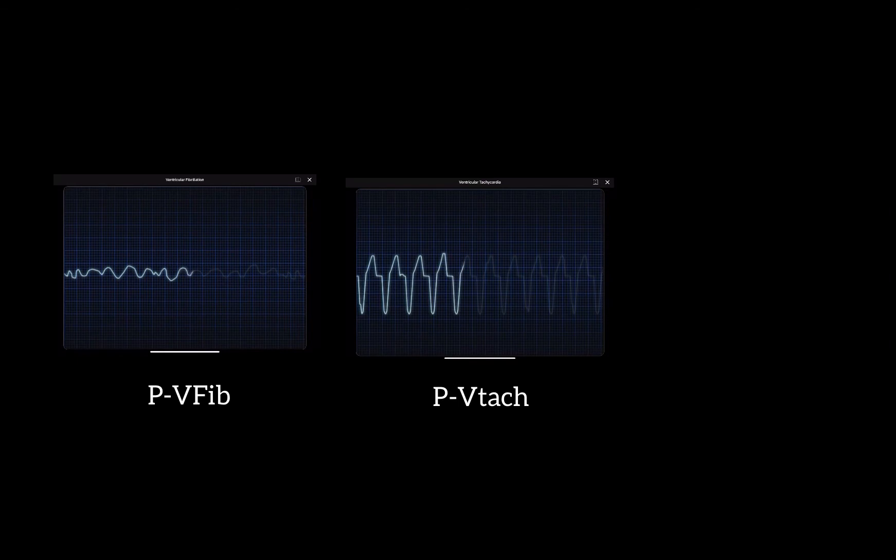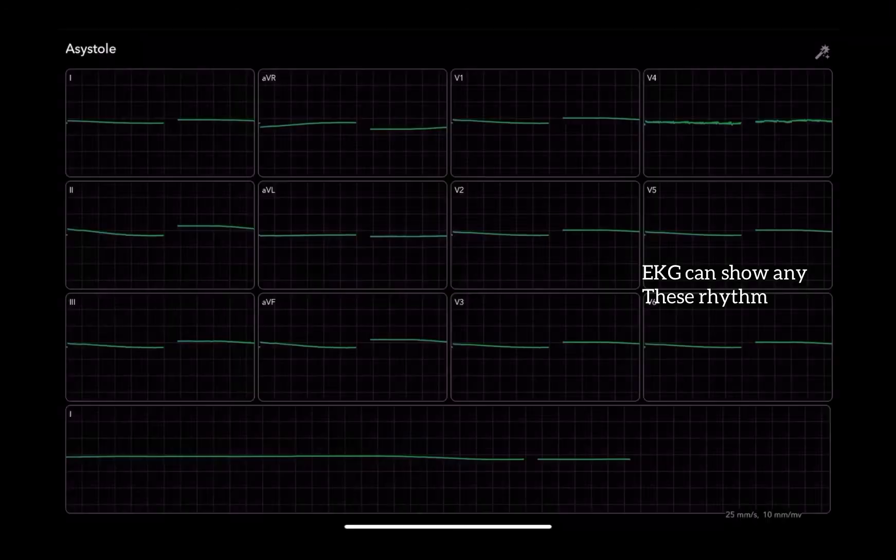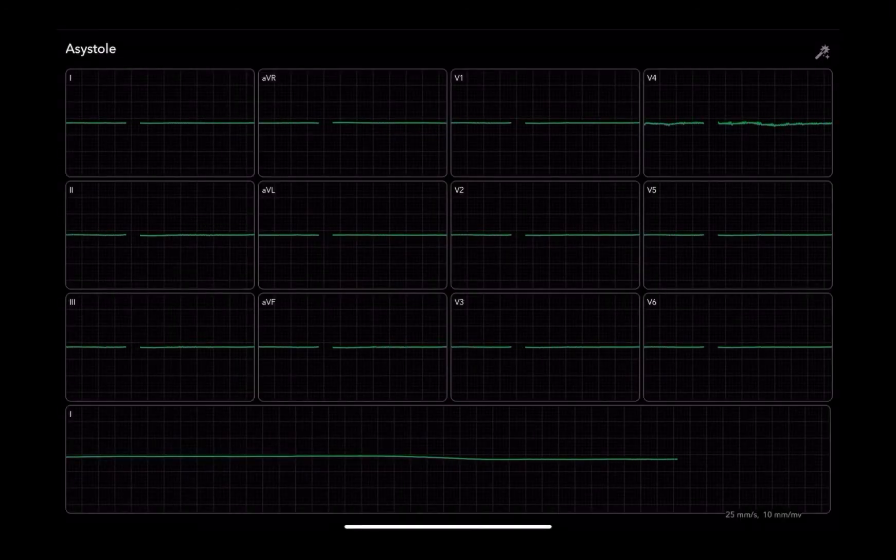So there are four types of ACLS algorithms. And depending on what arrhythmia the patient presents, that's going to determine which algorithm is appropriate. So the one that we're going to focus on in this video is the cardiac arrest algorithm. Now, typically patients with pulseless rhythms such as VFib, pulseless VTAC, pulseless electrical activities like PEA, or asystole, they would be appropriate for this cardiac arrest algorithm.